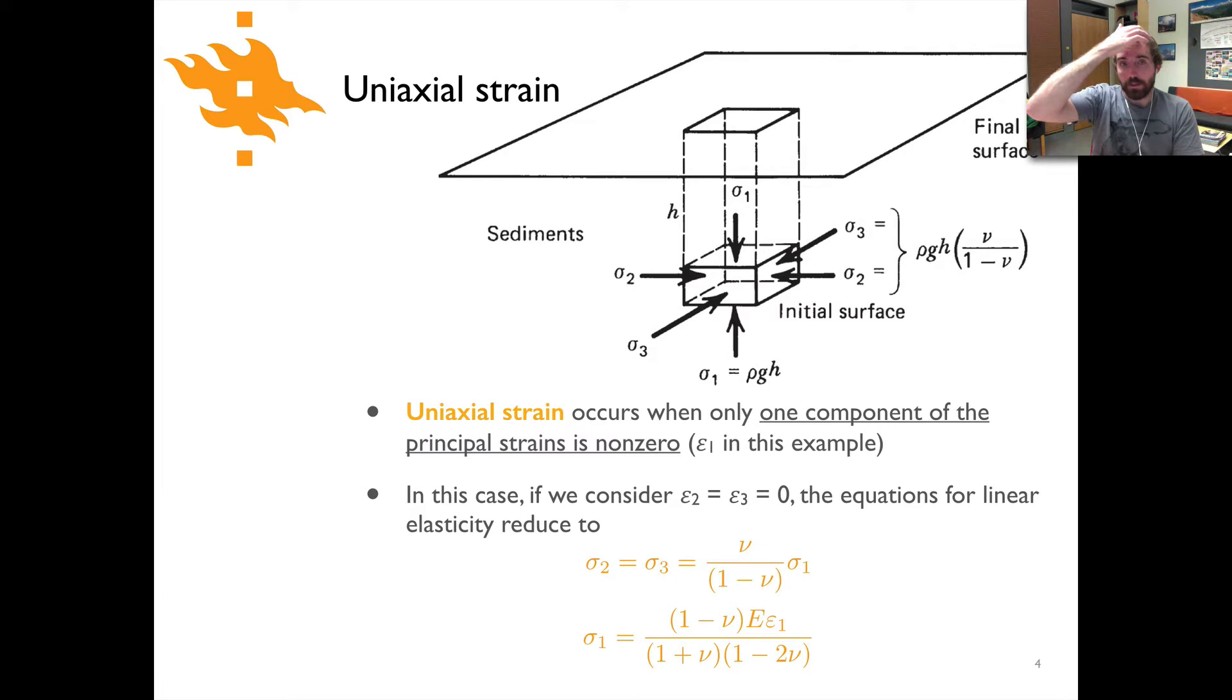All right so let's talk about uniaxial strain. As I've already mentioned, uniaxial strain occurs when only one component of the principal strains is not equal to zero. So that means the material is only going to deform in one direction. Previously we had squeezed the material along one axis and seen that it expanded on the other two. Here we're confining those other two axes so that there can't be any deformation and we're just going to apply or experience strain rather in one direction. In this case we'll be talking about epsilon one, the largest principal strain. So for this scenario we can set epsilon two and epsilon three equal to zero in the equations from linear elasticity that were given two lectures ago.